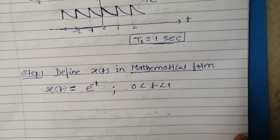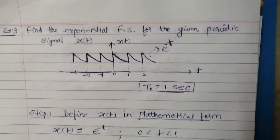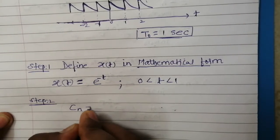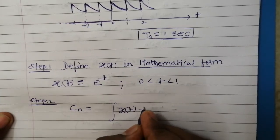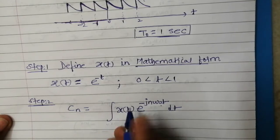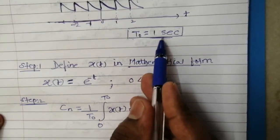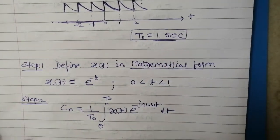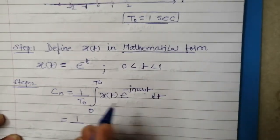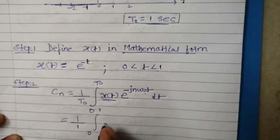Now step number two: we will find the Fourier coefficients. Since it is asked to find the exponential Fourier series, we will find C_n. C_n is calculated as one over T₀ times the integral from zero to T₀ of x(t) multiplied by e raised to power minus j·n·ω₀·t, dt. We have already calculated T₀ to be one second, so we place T₀ equals one. x(t) for this interval is e raised to power minus t.